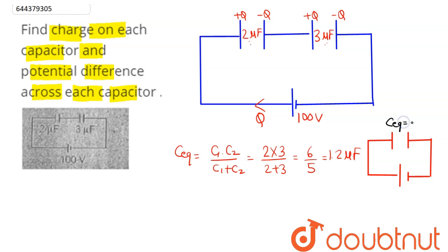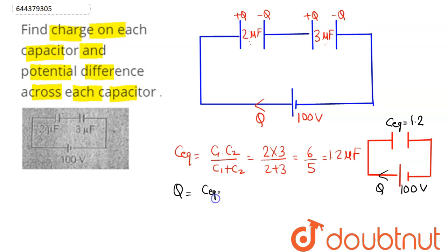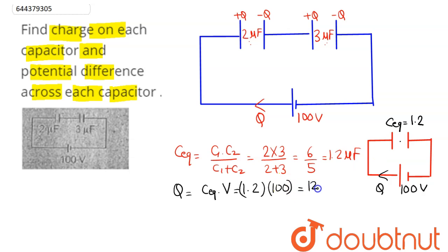So the equivalent capacitance C_eq is 1.2 microfarad and the battery is 100 volts. The charge flowing from the battery is given by Q = C_eq × V. C_eq is 1.2 and V is 100 volts, so the potential across the battery is supplied across this capacitance, giving Q = 120 microcoulombs.